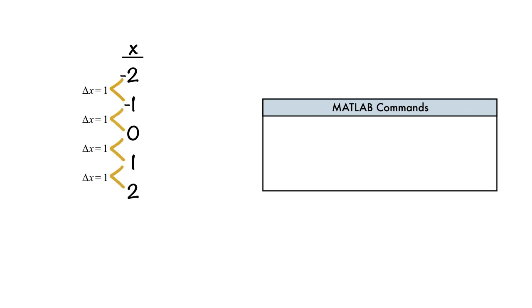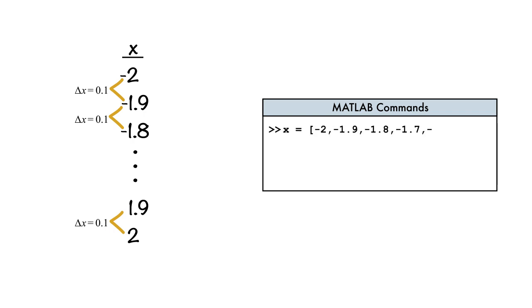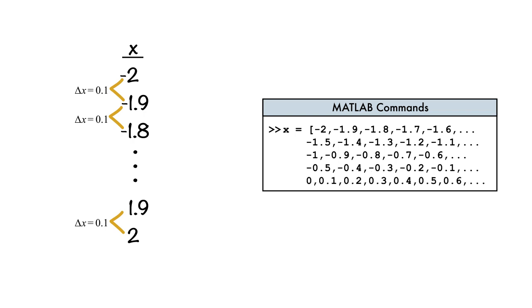Creating lists of regularly spaced numbers is very common. We know how to create vectors by entering numbers, but what if we want to make the spacing 0.1 instead of 1? Our vector grows from 5 numbers to 41 numbers, and who wants to type in 41 numbers?